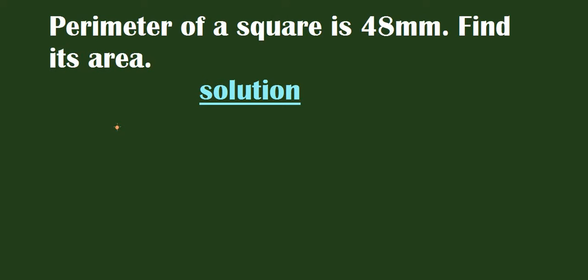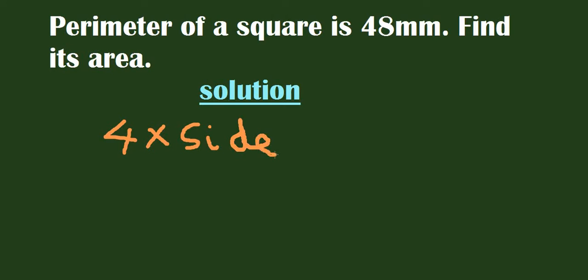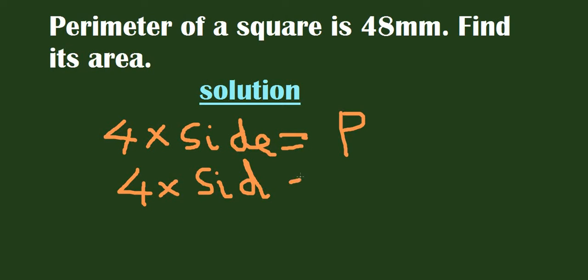So 4 times side equals to perimeter — that is the formula. 4 times side equals to perimeter itself. So 4 times side equals to 48 millimeters.